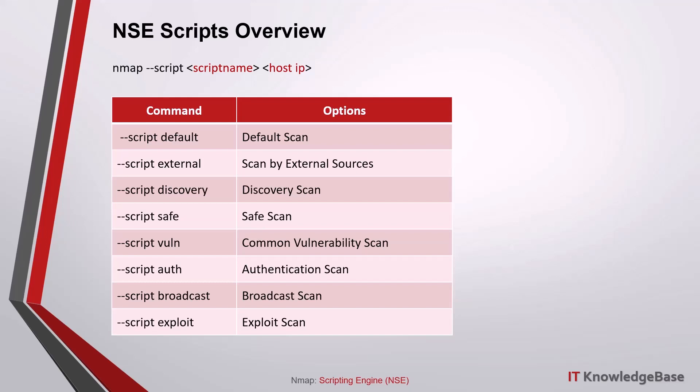The second script category is --script external. Scripts in this category may send data to a third-party database or another network resource. An example is whois-ip, which connects to a WHOIS server to learn about the address of the target. Third-party operators may record anything you send, including your IP and the target's address.